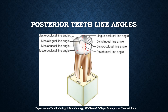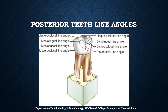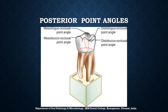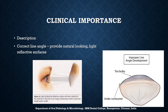For posterior teeth there are eight line angles: the mesio-occlusal line angle, mesiolingual line angle, mesiobuccal line angle, bucco-occlusal line angle, linguo-occlusal line angle, distolingual line angle, disto-occlusal line angle, and distobuccal line angle. For point angles, anterior teeth have four: the mesiolabio-incisal, mesiolinguo-incisal, distolabio-incisal, and distolinguo-incisal point angles. Posterior teeth also have four point angles: the mesiolinguo-occlusal, mesiobucco-occlusal, distolinguo-occlusal, and distobucco-occlusal point angles.